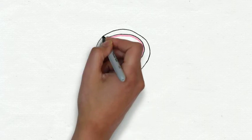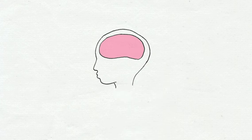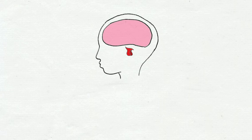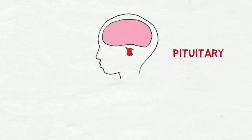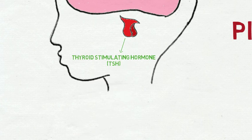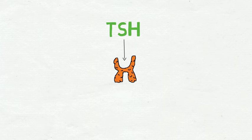Control of the thyroid starts in the brain at an area called the hypothalamus. Using hormones of its own, the hypothalamus sends a signal to a gland called the pituitary, causing it to release thyroid-stimulating hormone, or TSH. TSH travels through the bloodstream until it gets to the thyroid.